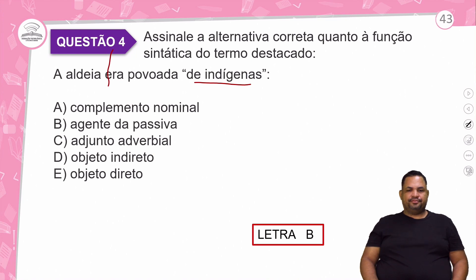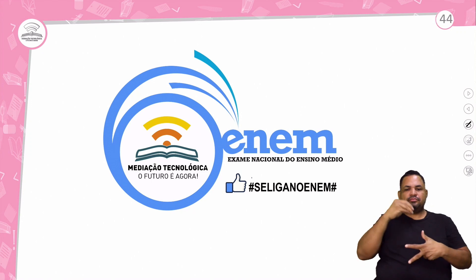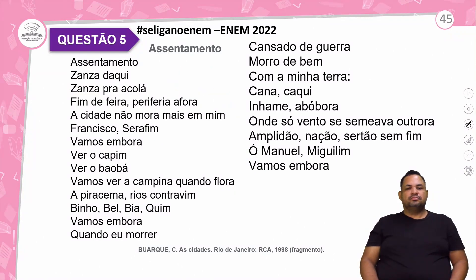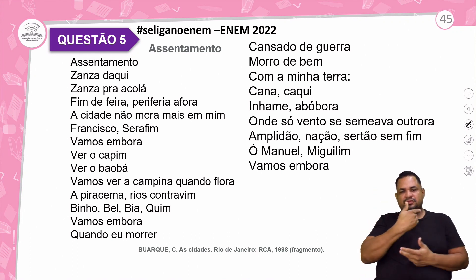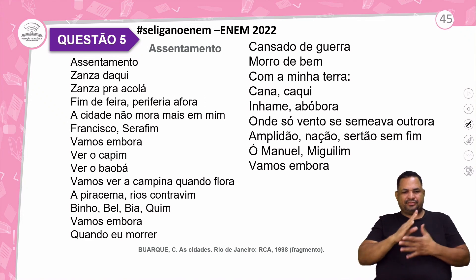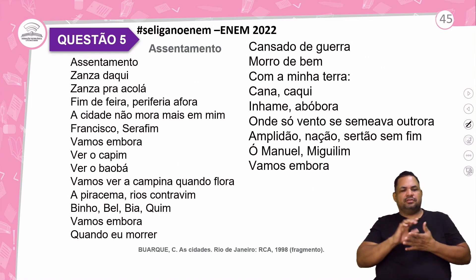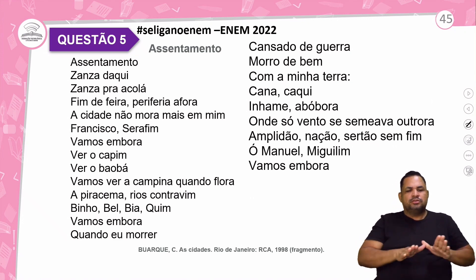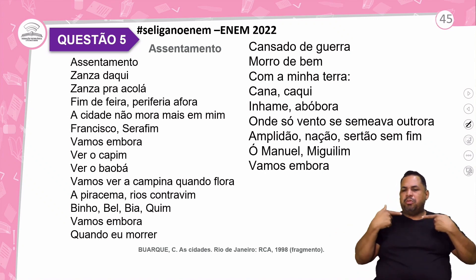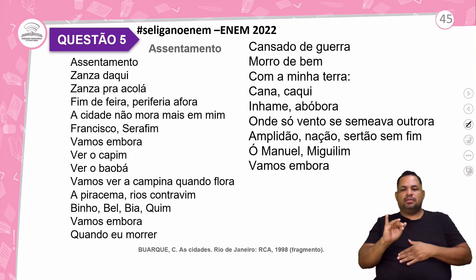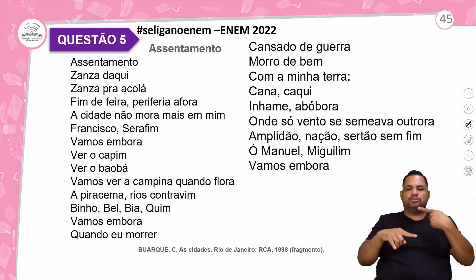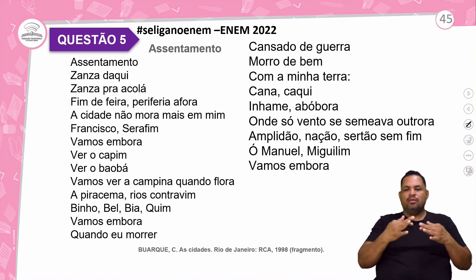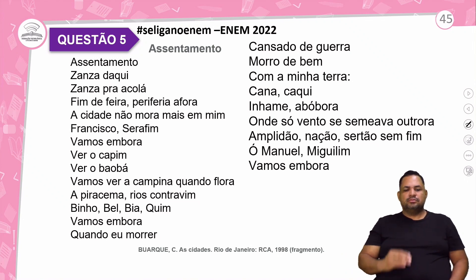Questão 5, do Se Liga no Enem — Enem de 2022. Poema 'Assentamento' de Chico Buarque: 'Zanza daqui, zanza para cá. Fim de feira, periferia fora. A cidade não mora mais em mim. Francisco será fim. Vamos embora ver o capim, ver o baobá, vamos ver a campina quando flora. A piracema, rios contra vim. Vamos embora quando eu morrer. Cansado de guerra, amor de bem. Com minha terra, cana, caqui, inhame, abóbora. Onde só o vento se semeava outrora. Amplidão, nação, sertão, sem fim. O Manuel, Miguelim, vamos embora.' Chico Buarque — As Cidades.